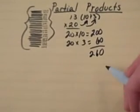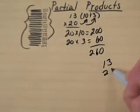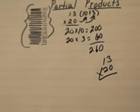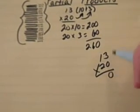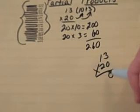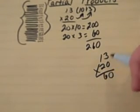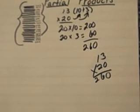If you were to simply begin with the standard method, the students might be confused about the steps they are taking, thinking that they are actually multiplying 2 times 3 rather than 20 times 3, and 2 times 1 rather than 20 times 10.